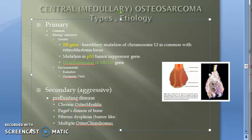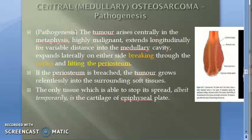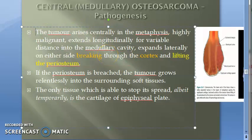We also saw multiple osteochondromas as a predisposing condition. Now we will see the pathogenesis. The tumor arises around the metaphysis — specifically centrally within the metaphysis. It is highly malignant, so longitudinally it will extend into the medullary cavity, and laterally on both sides it will also extend.